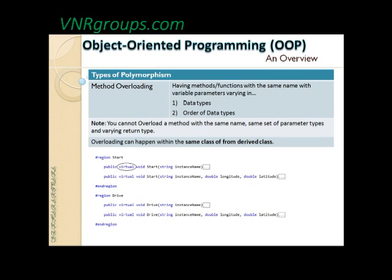The return type doesn't matter because it really doesn't play a role in making your method unique. What matters is the number and type of parameters passed when you make a call. When I say 'start' passing one string or two doubles - that's the message to the respective object to invoke. So you cannot overload methods with the same name and same parameter types with only a different return type.